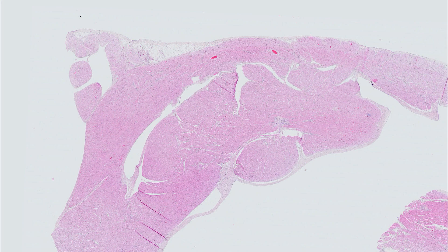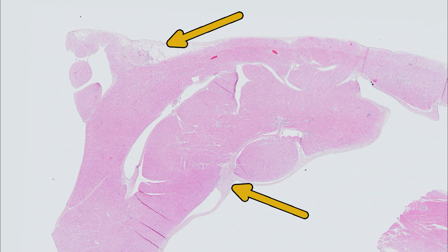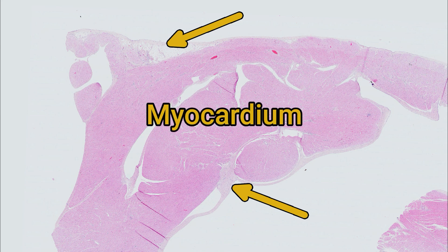First, let's talk about the basic structure you see when you look at a section of the heart under low power magnification. You'll notice two external surfaces with heart muscle in between.